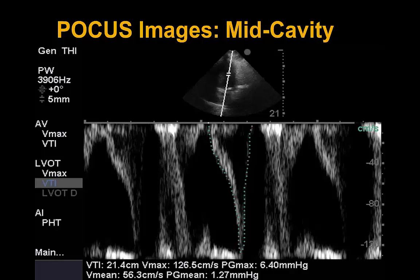Factors that can exacerbate a mid-cavitary gradient include anything that increases inotropy — in this case, epinephrine would actually worsen the mid-cavitary lesion. Afterload reduction also worsens the gradient: decreased aortic pressure increases flow through the mid-cavity into the LVOT and aorta. Therefore, we would actually want to increase afterload to reduce this mid-cavitary gradient.